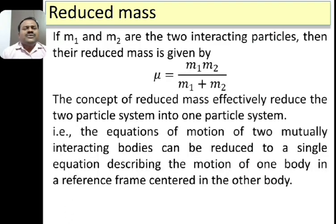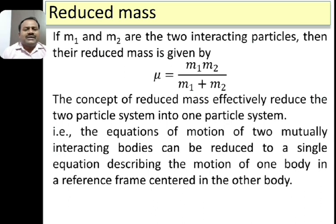If m1 and m2 are the two interacting particles, then the reduced mass is given by μ = m1·m2 / (m1 + m2). By introducing μ, we can effectively reduce the two-particle system into a one-particle system. That is, the equations of motion of two mutually interacting particles can be reduced to a single equation describing the motion of one particle in a reference frame centered on the other particle. Using the concept of reduced mass, we can reduce a two-body problem into a single-body problem, which is relatively easier to analyze.